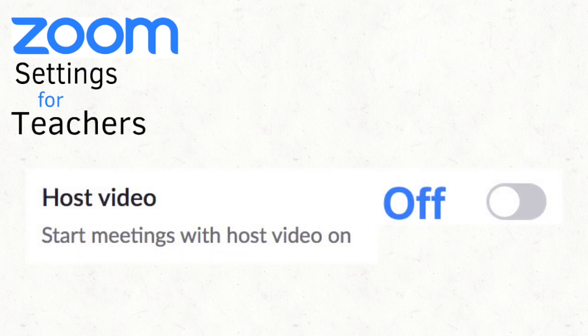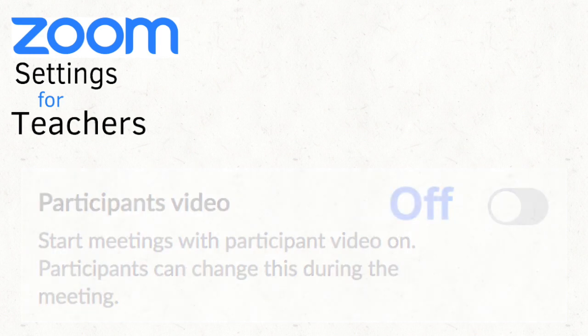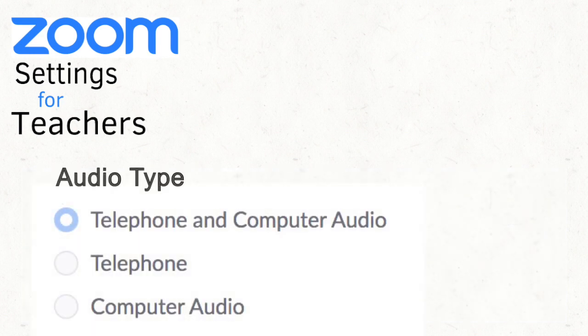I suggest that teachers hosting meetings start their meetings with their host video off. Once the teacher is ready for the students to see them, then they can turn their video on. At the start of the meetings, the participants' videos should also be off. The teacher or the students can turn on the students' videos if or when they're ever ready for other people to see them during the Zoom meeting.